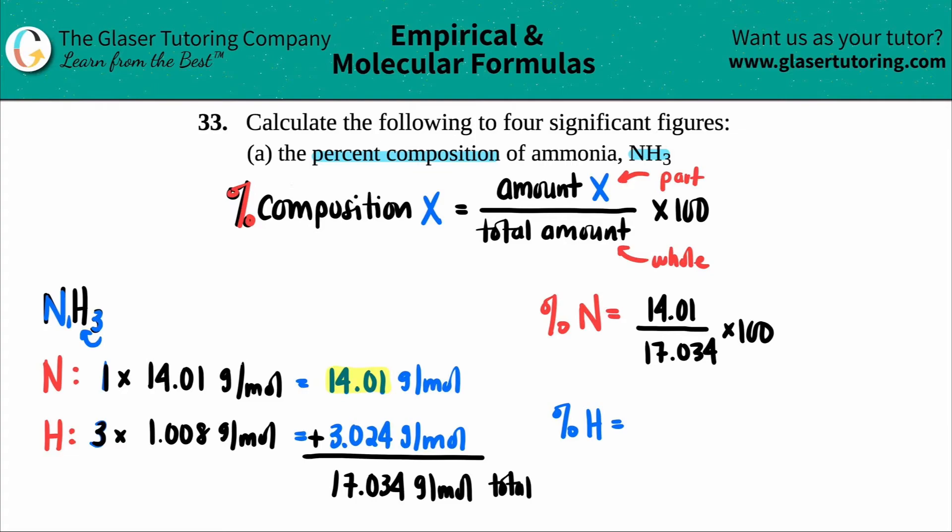Let's just set up the same thing for the hydrogen. So for the hydrogen, you take hydrogen's total amount that we calculated, the 3.024, divide that by the total molar mass, 17.034, and then just multiply by 100. So the percent nitrogen is 14.01 divided by that number and then times by 100, they want it to four significant figures.